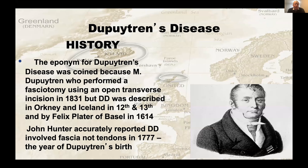Dupuytren's disease is called Dupuytren's disease because Dupuytren performed the first fasciectomy in 1831, but he wasn't the first to look at this disease. It's noted in writings from Orkney and Iceland in the 12th and 13th century. Felix Platter from Basel described it in 1614. John Hunter, a member of the British Royal College of Surgeons, did dissections in 1777—the year of Dupuytren's birth—and described this accurately.